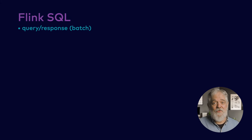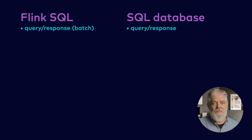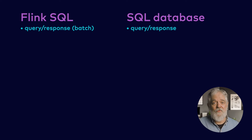Now it's time to return to the question I asked at the beginning about what you can do with Flink SQL and how that compares to how SQL databases are used. Stream processing is what makes Flink special, but Flink is also a capable batch processor. When used in batch mode, Flink SQL operates in a query-response fashion, just like a database. The main difference is that with Flink, the underlying data lives outside of Flink in places like Kafka clusters and data lakes, rather than in storage managed directly by the database.